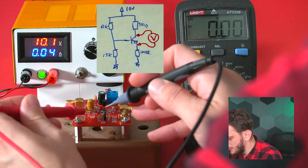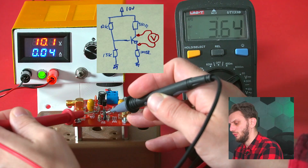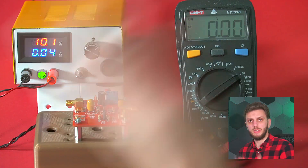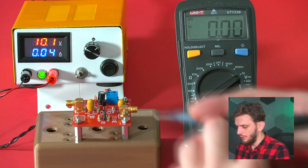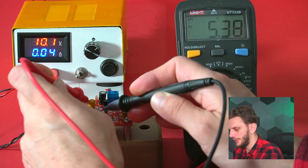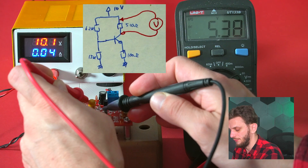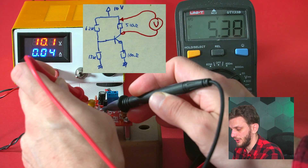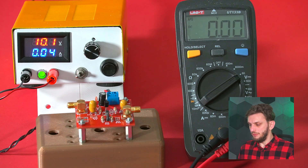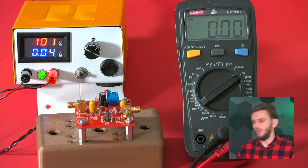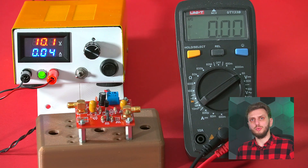If we look at the collector-emitter voltage, we get 3.64 volts — very close to the simulation value. And finally, the voltage drop on the collector resistance is 5.38 volts. So all three DC values in the circuit are running as expected.